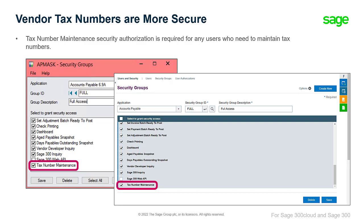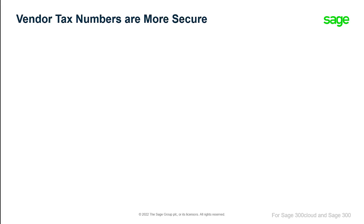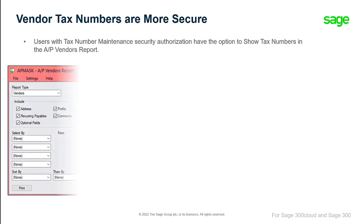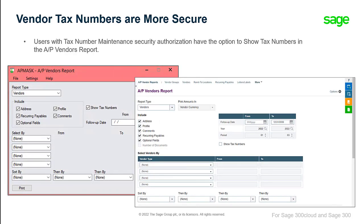This security authorization is new and is not assigned to any users automatically. Also, if you have the appropriate security authorization, the option to show tax numbers in the AP Vendors Report screen is available.